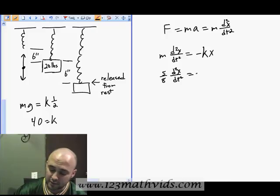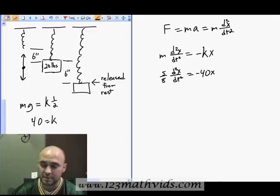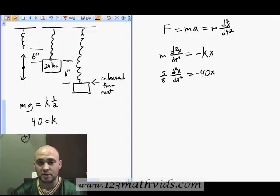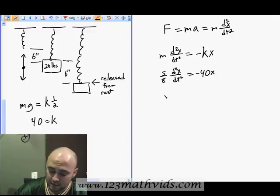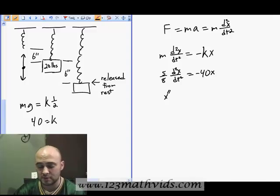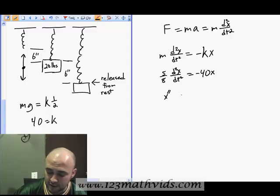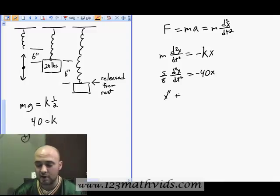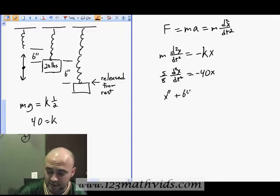So I'm just going to rewrite this using the prime notation. I have the second derivative of x, and I'm going to take 8 fifths times through the equation. 8 fifths times negative 40 gives me negative 64. Add to the other side, plus 64x equals 0.